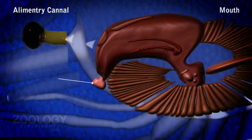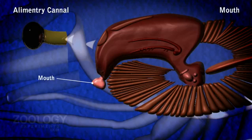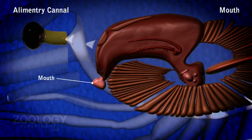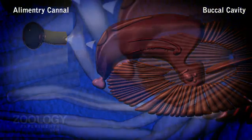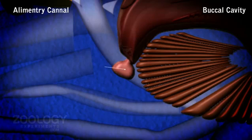The mouth is a large slit-like aperture lying midventrally below the anterior end of the head. It is bounded in front by the fleshy labrum, laterally by the plate-like incisor processes of mandibles, and behind by the bi-lobed labium. The mouth leads into the buccal cavity.